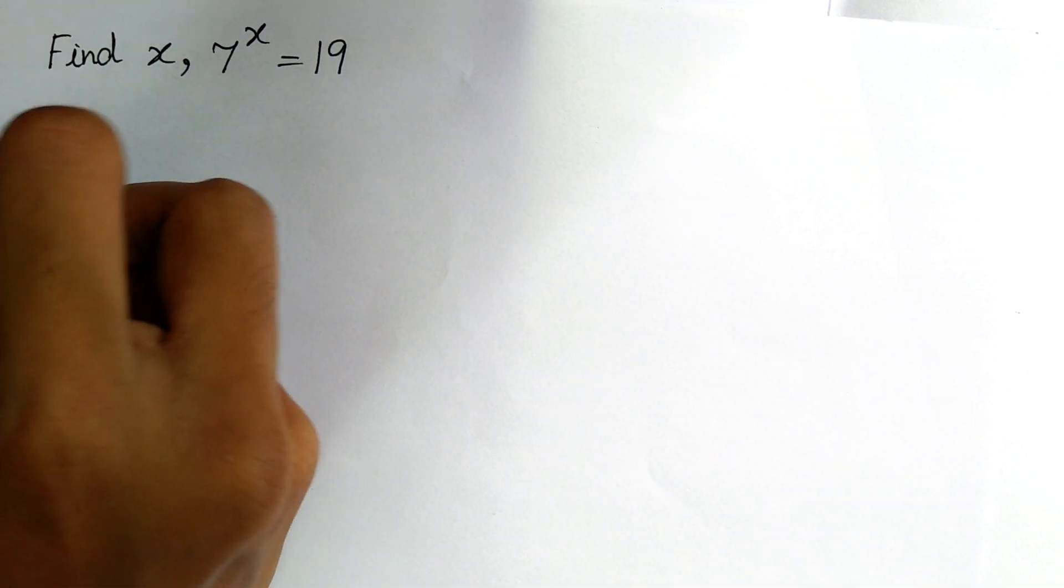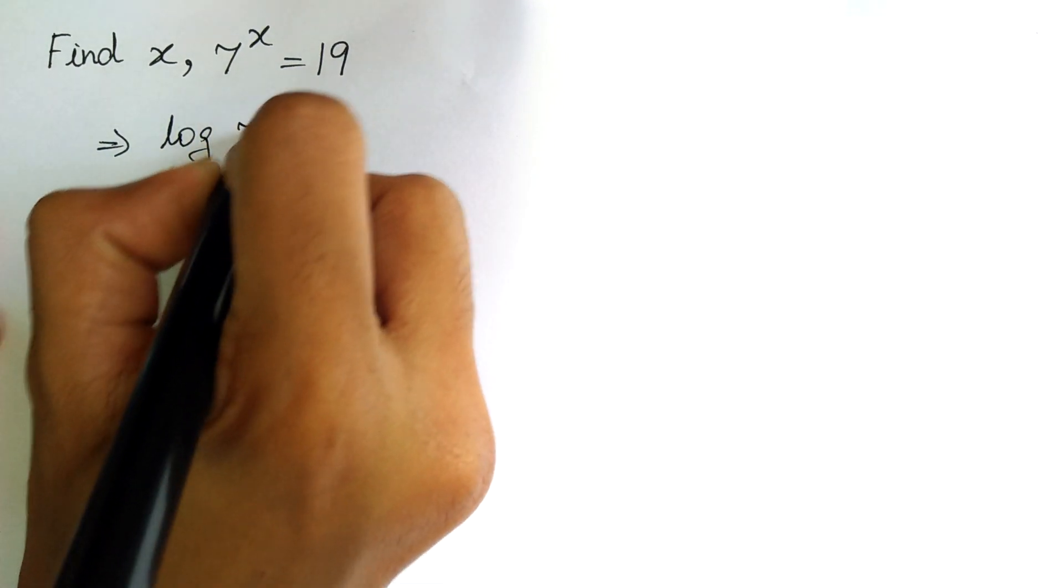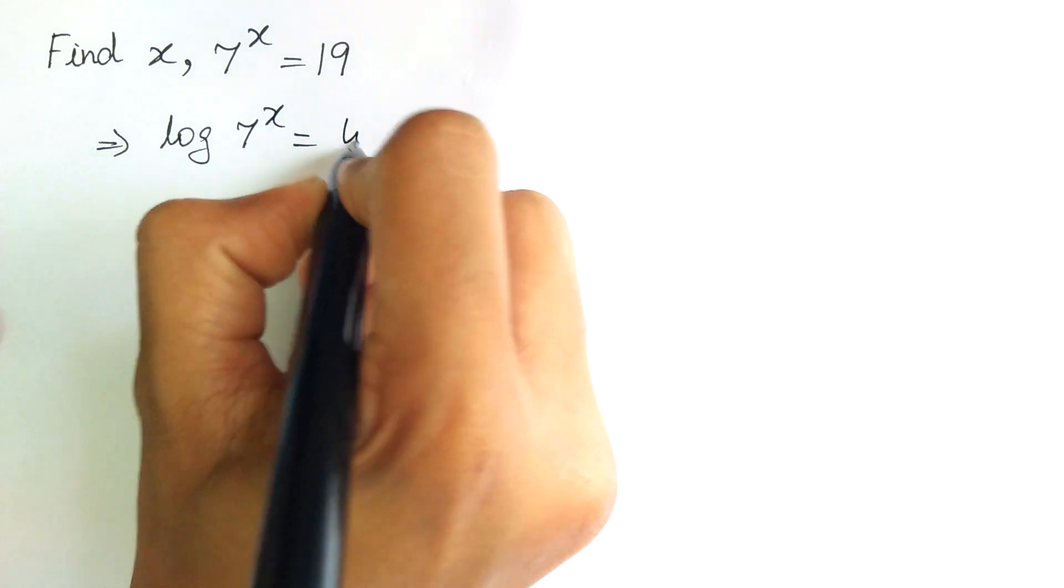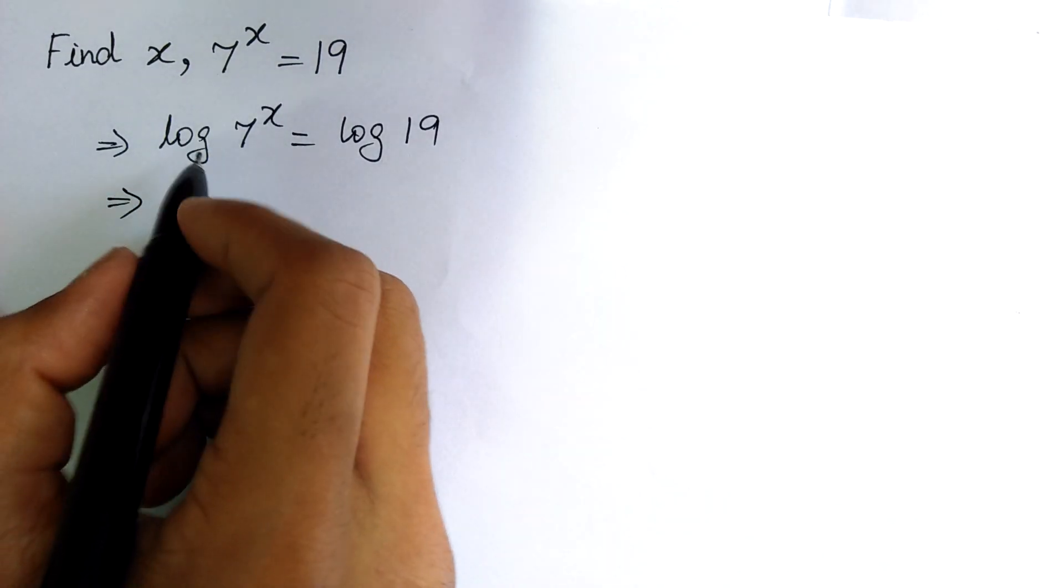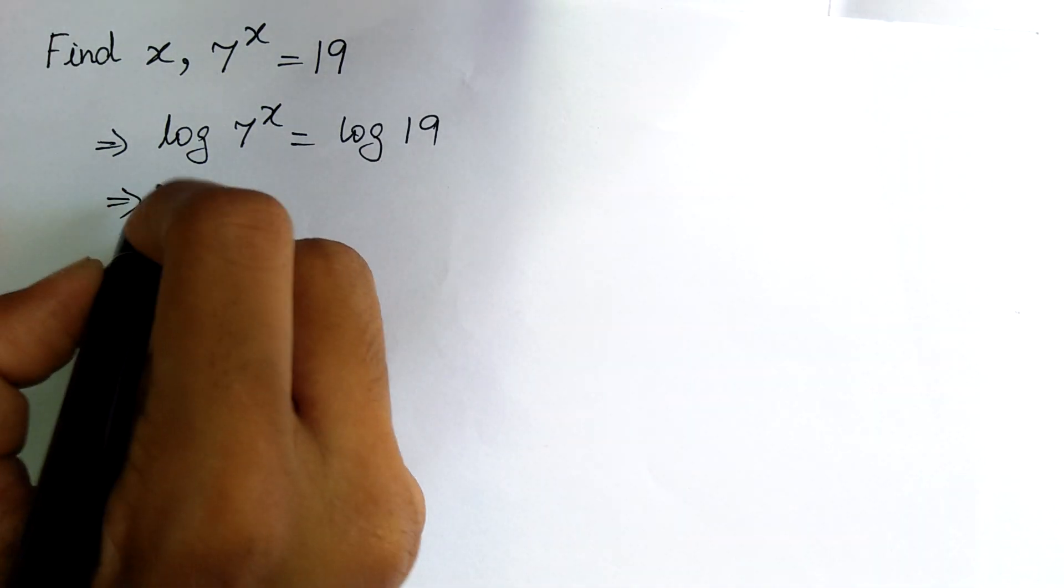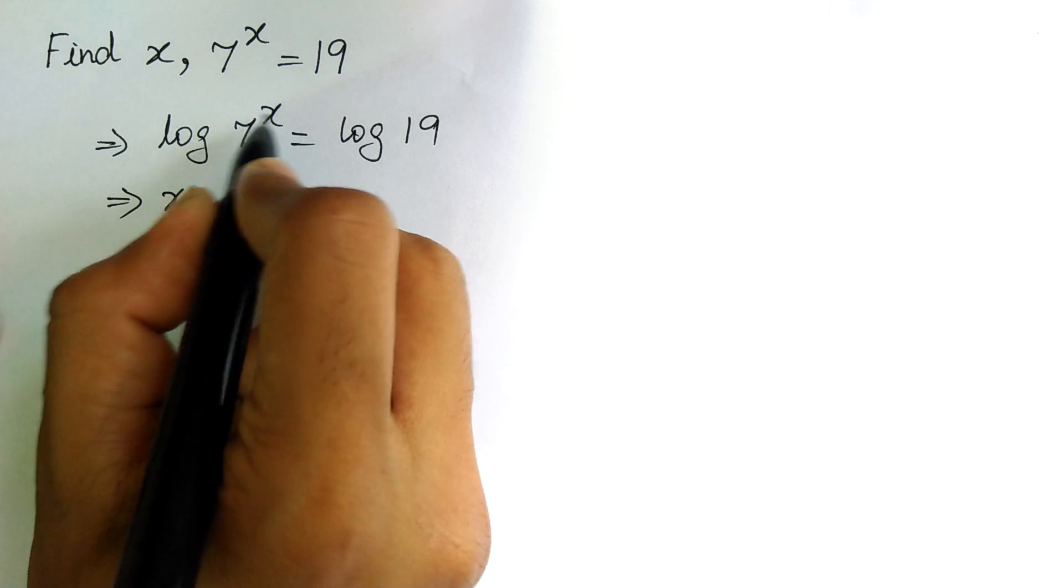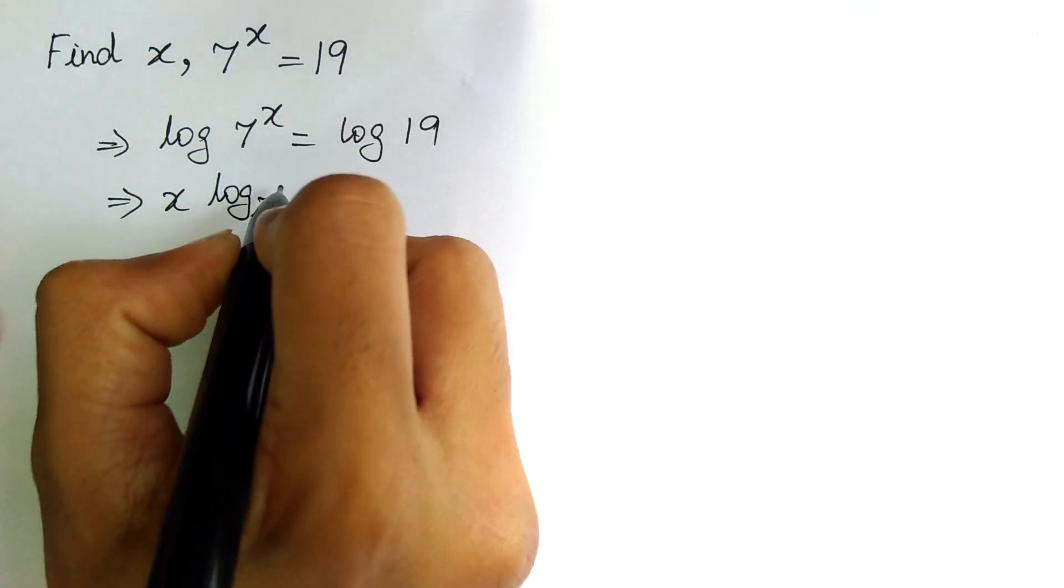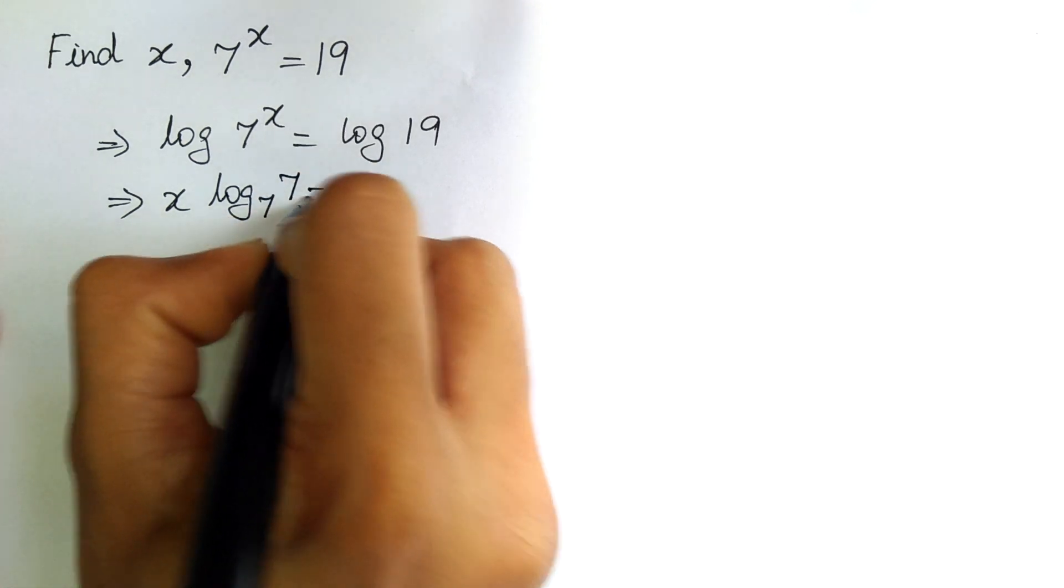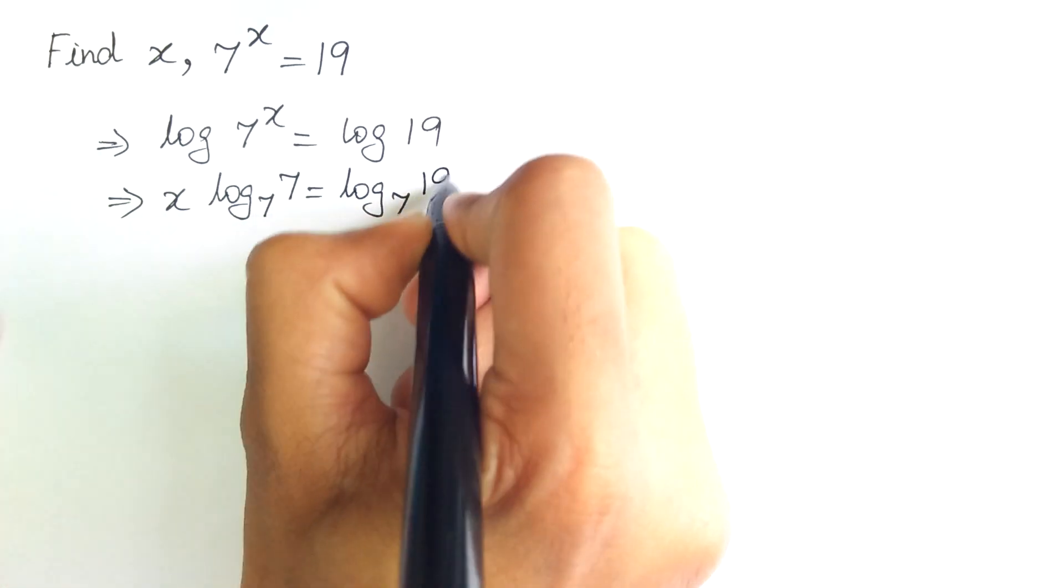To find the value of x, let us take log on both sides. Here the base is 7. Therefore, log 7 power x can be written as x into log to the base 7 of 7 is equal to log to the base 7 of 19.